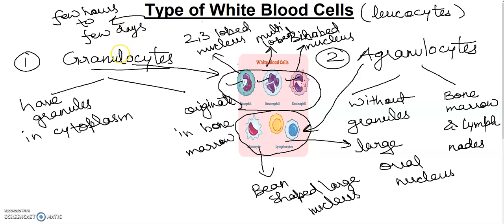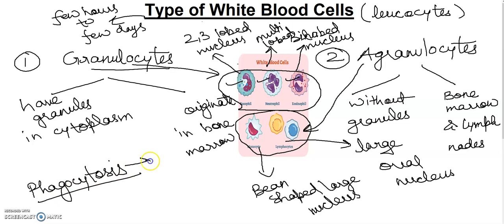One very important term related to white blood cells is phagocytosis. I will make a separate video where we will discuss phagocytosis and diapedesis in detail as separate topics.